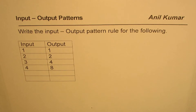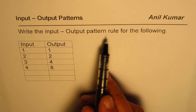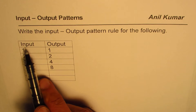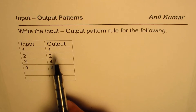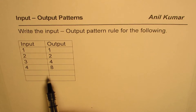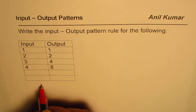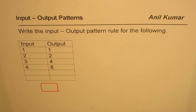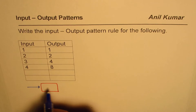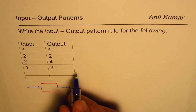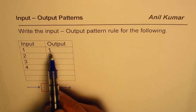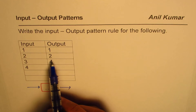I'm Manil Kumar, sharing with you a question from my subscriber, a Grade 6 student. The question is: write the input-output pattern rule for the following. We are given inputs 1, 2, 3, 4 and outputs 1, 2, 4, 8. We need to find how the input is related to the output. For all these input-output questions, we think about some machine in between which converts numbers from input, performs some operations, and gets the output.